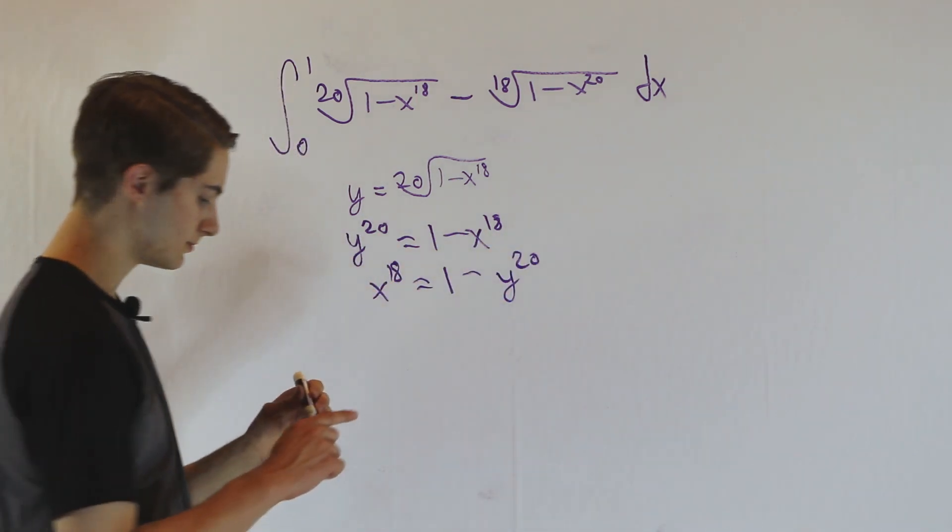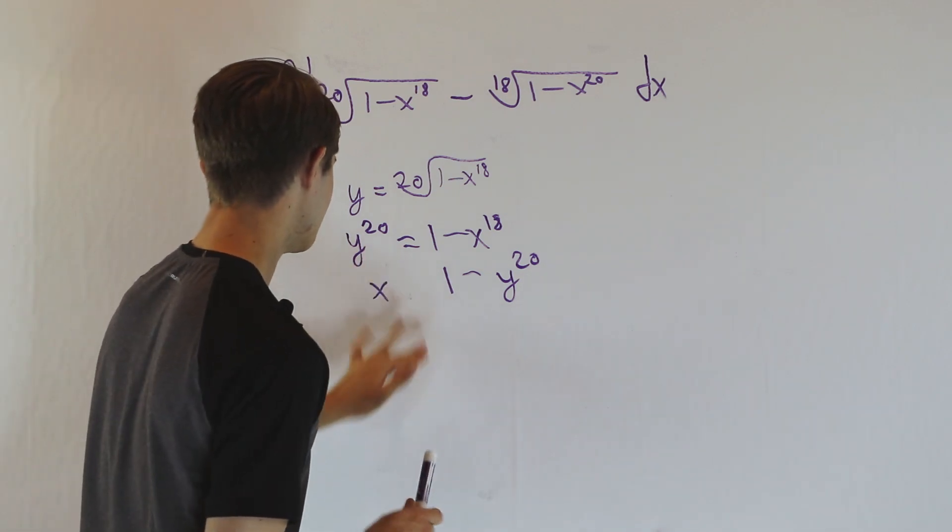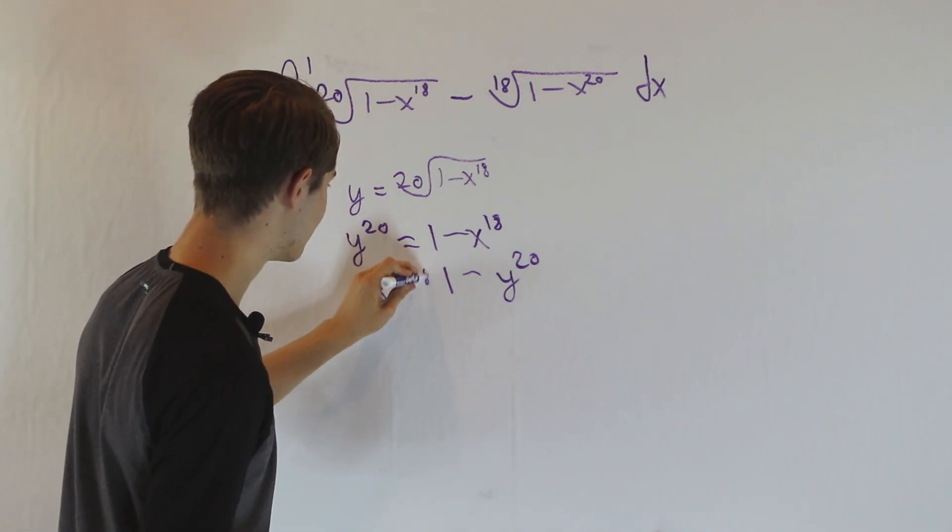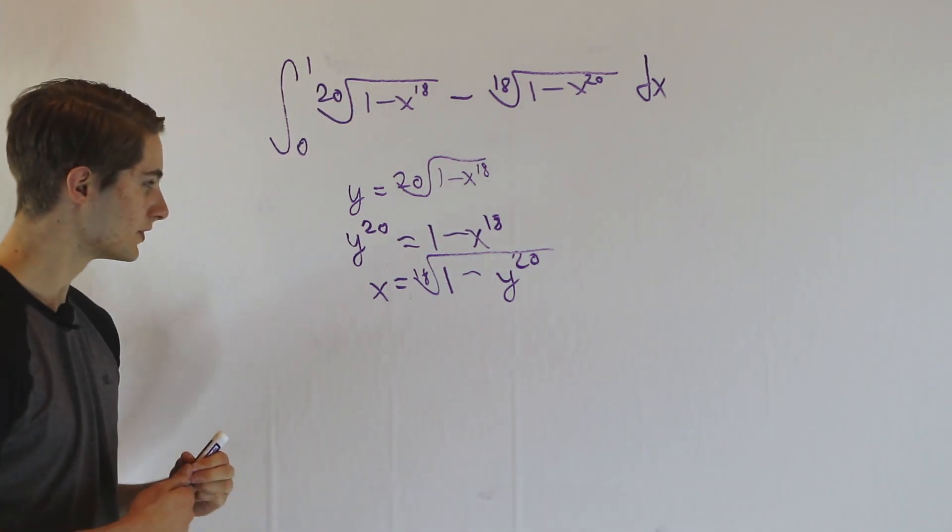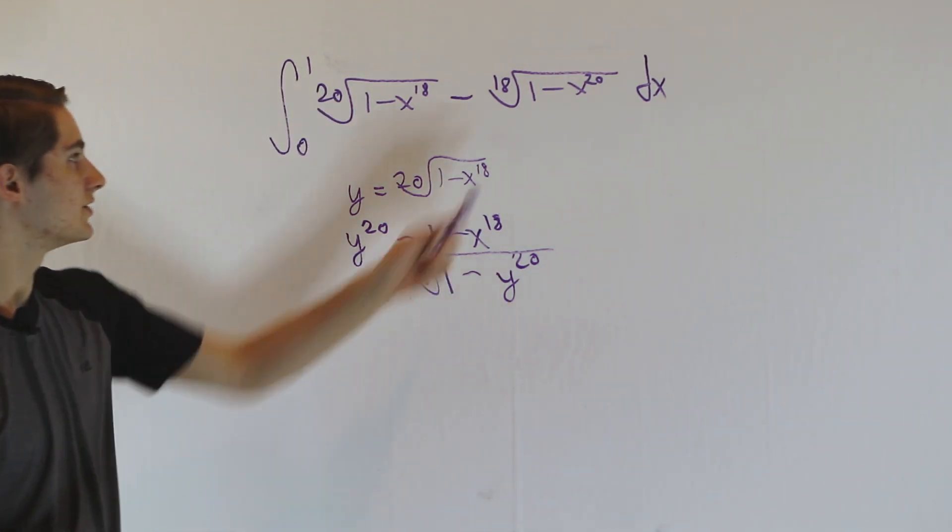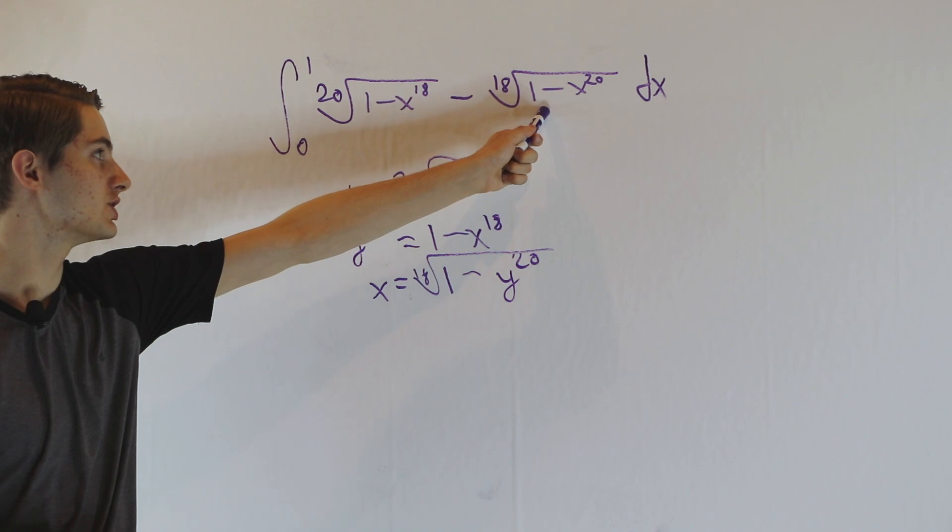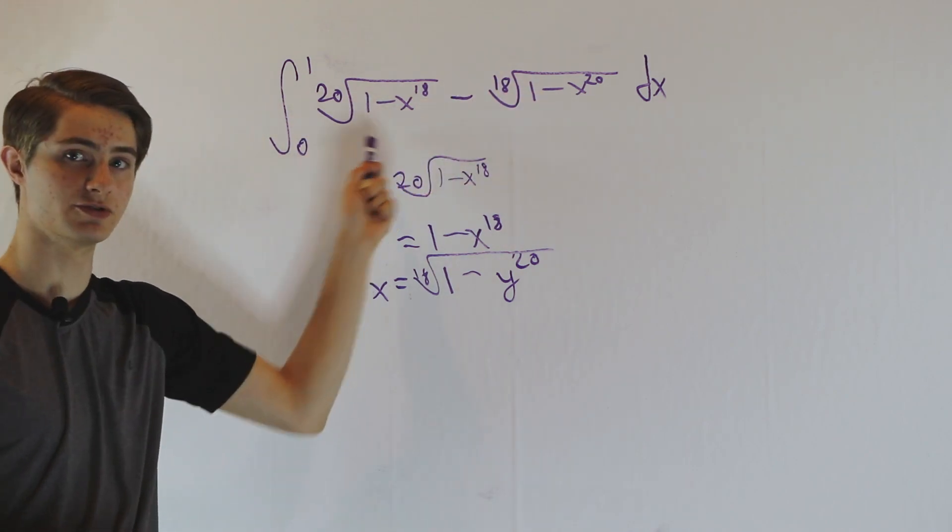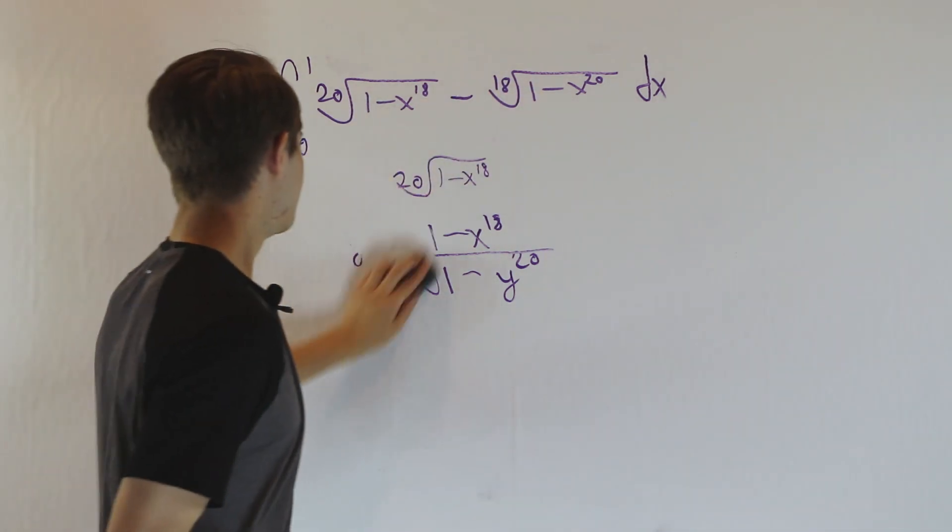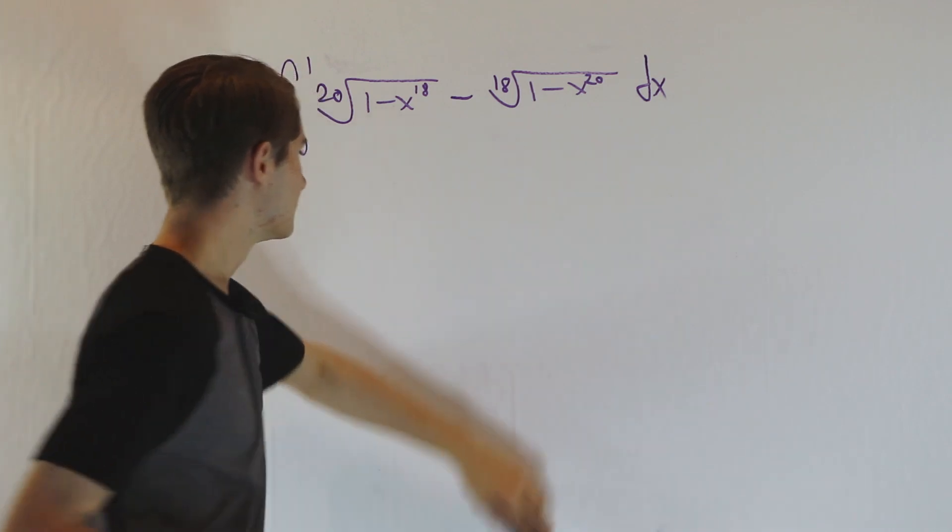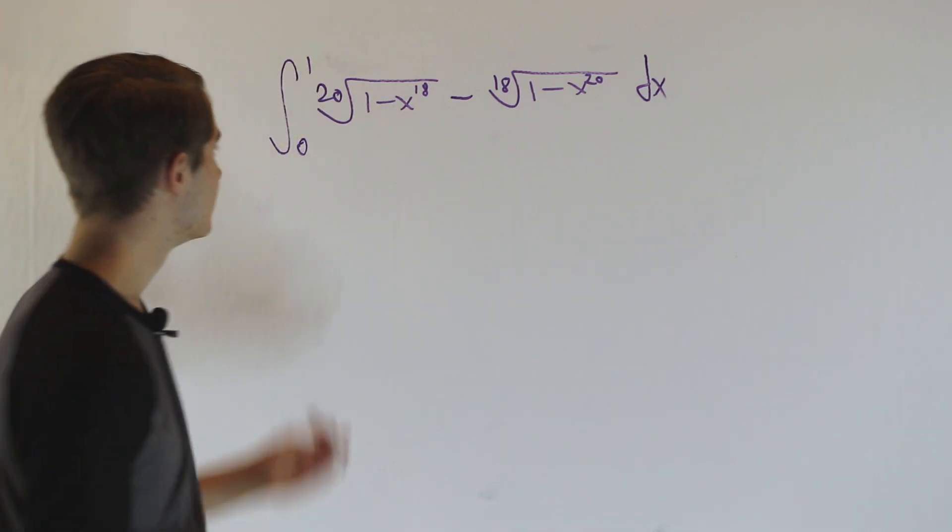Taking the 18th root on both sides, we see that x is the 18th root of 1 minus y to the 20th. What this tells us is that our second function is the inverse of the first function. Let's see if we can use that information to help us with our integral.